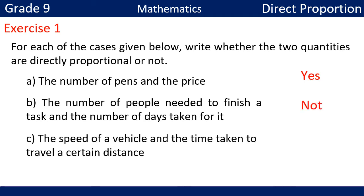Third: the speed of a vehicle and the time taken to travel a certain distance. The speed of a vehicle and the time taken to travel a certain distance are not directly proportional.